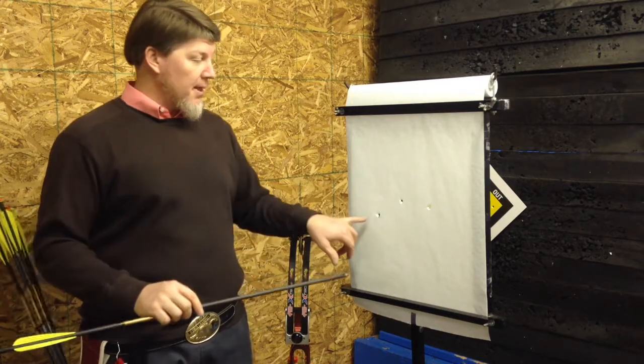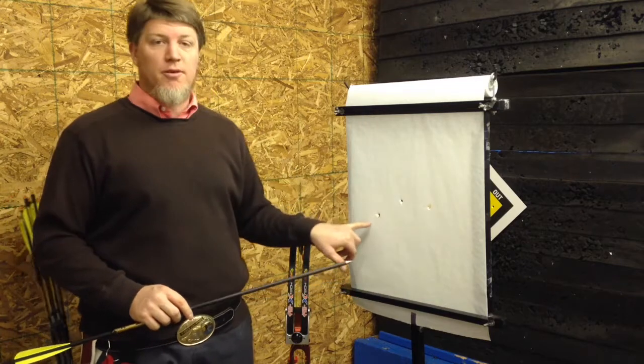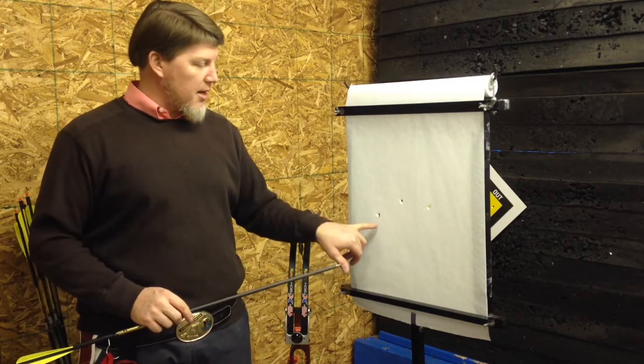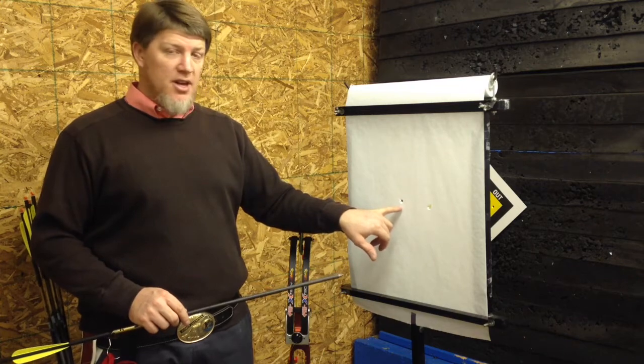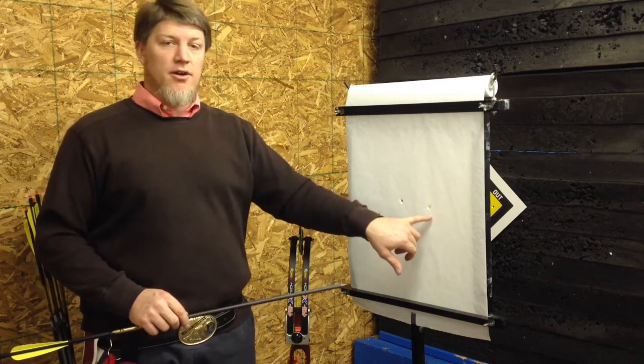That way you know that, like in this case, all three arrows are perfect bullet holes. This one was shot at about six feet, this one at about 15 feet, this one at about 15 yards.